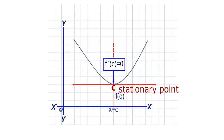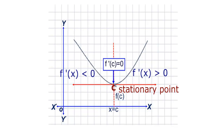We also have f'(c) equal to 0. How do we justify this? Since the function is decreasing on the left neighborhood of point c, f'(x) has a negative sign. Similarly, the function is increasing on the right neighborhood of point c, so f'(x) will have a positive sign. Therefore, on the left side f'(x) is less than 0, and on the right side f'(x) is greater than 0. From this, we can say that at x equal to c, where the function is neither increasing nor decreasing, f'(x) must be 0. Therefore, we say that f'(c) is equal to 0.